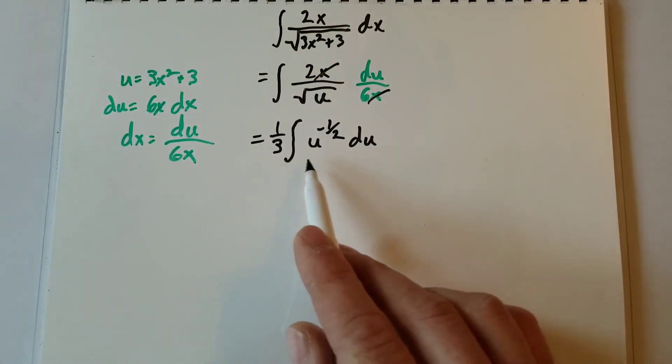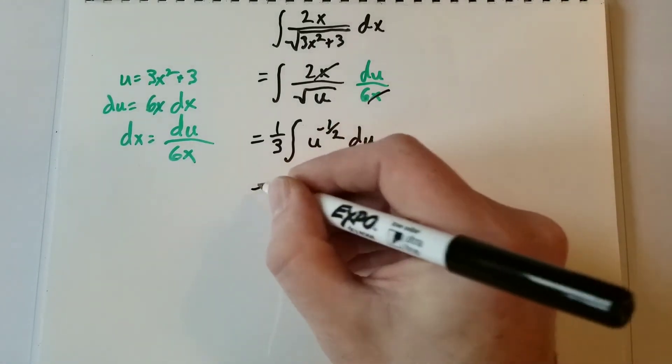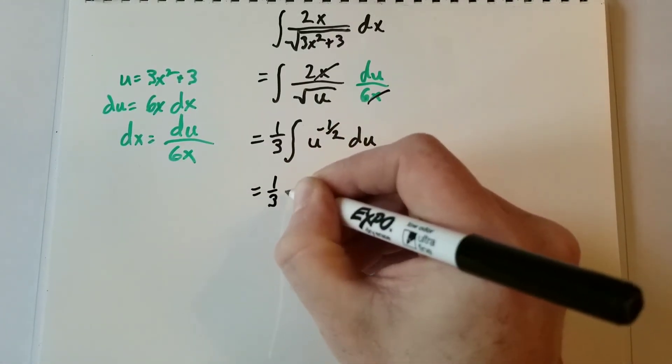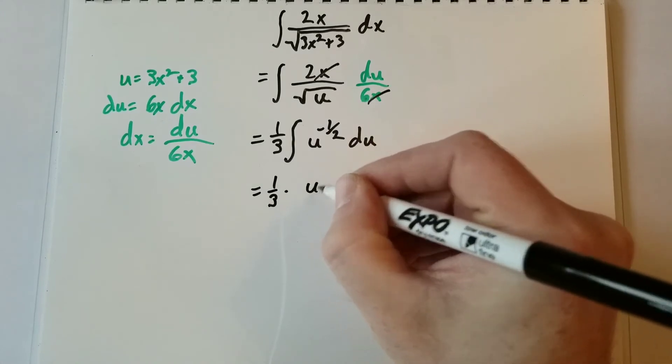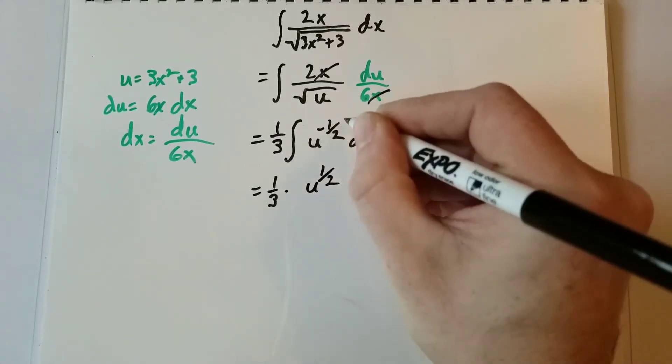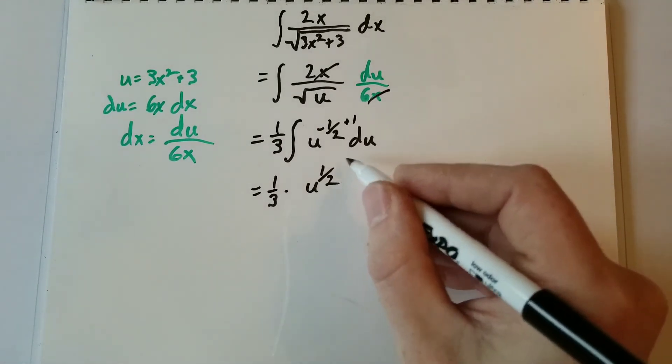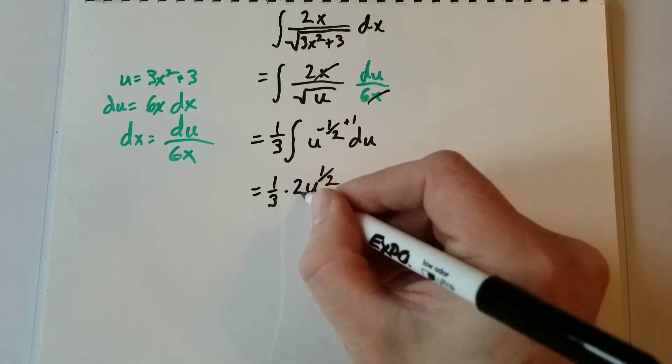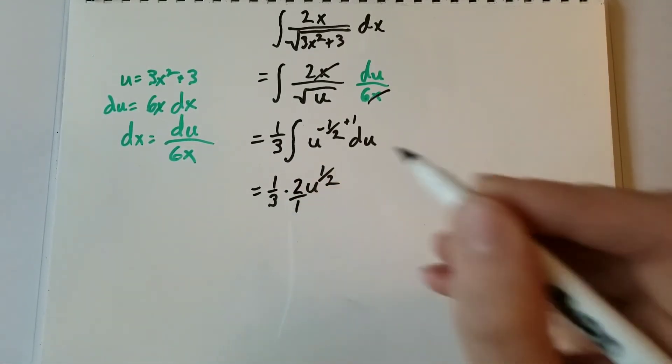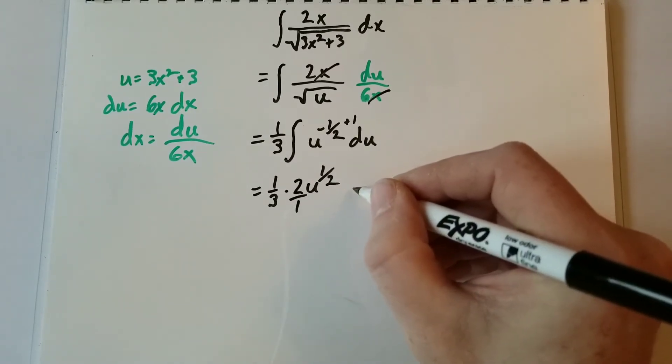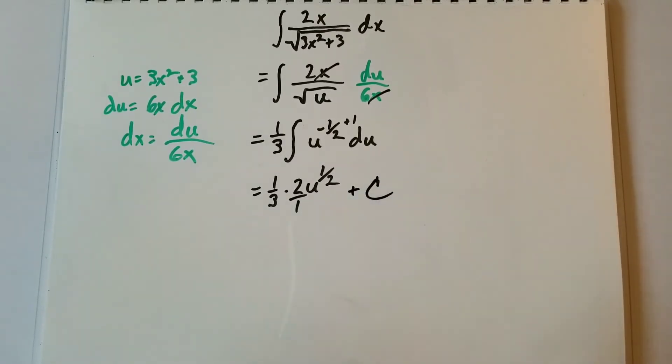All right, now all we've got to do is take the integral of this. So we have 1 third times u to the 1 half, because we add 1. And then we take the reciprocal of this and move it out front, so it's 2 over 1. And I'm also going to add my plus C now.